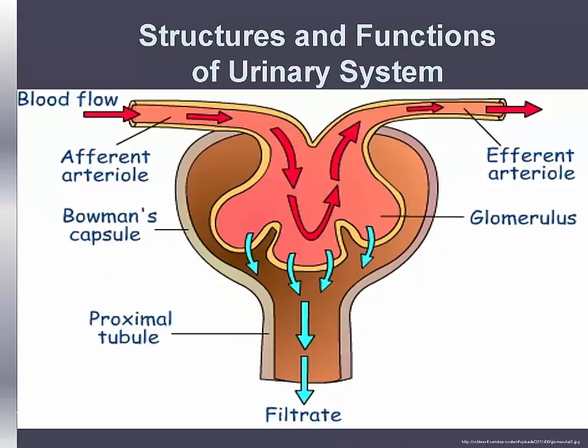Urine formation is the outcome of filtration, reabsorption, secretion, and excretion of water, electrolytes, and metabolic waste products. Urine formation begins at the glomerulus, a semi-permeable membrane in which blood is filtered. The hydrostatic pressure of the blood within the glomerular capillaries causes a portion of blood to be filtered across the semi-permeable membrane into the Bowman's capsule, where the glomerular filtrate begins to pass down the tubule. The normal glomerular filtration rate is about 125 mLs per minute.